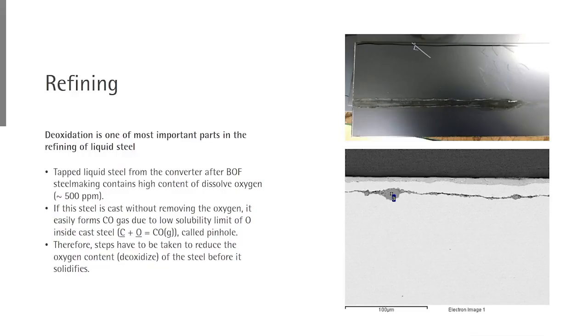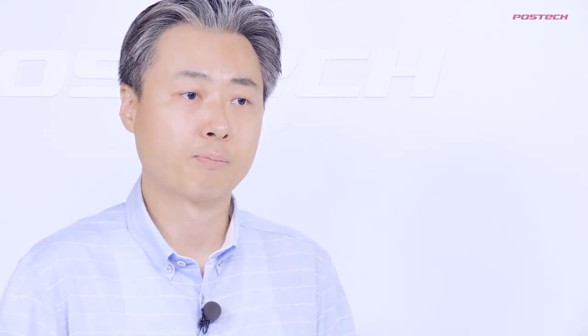Deoxidation is one of the most important parts of refining liquid steel. Once liquid steel is tapped from the BOF, it contains a significant amount of oxygen, about 500 ppm. If this liquid steel were cast directly, the oxygen solubility in solid steel is quite low, and most oxygen would evolve as CO gas through these reactions. Since steel is solidifying, this CO gas cannot escape and stays inside as pinholes — a significant defect. Therefore, we must decrease oxygen level before casting.